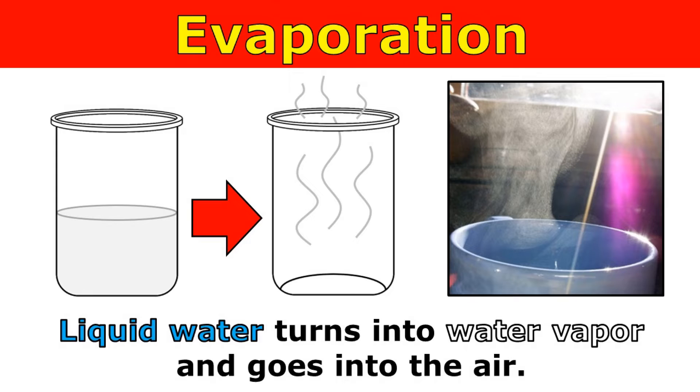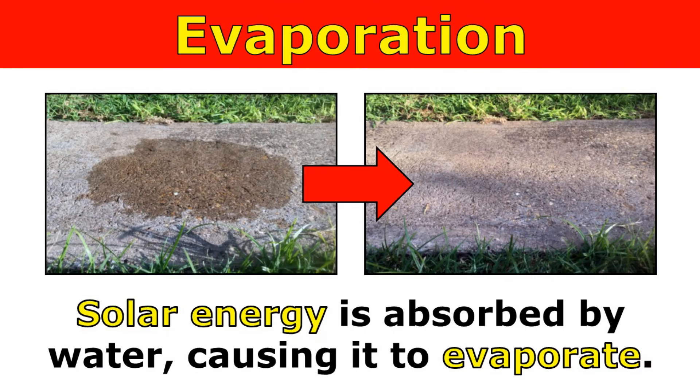When water evaporates, liquid water turns into water vapor and goes into the air. Solar energy is absorbed by water, causing it to evaporate. Whenever it looks like water just disappeared, it probably just evaporated.